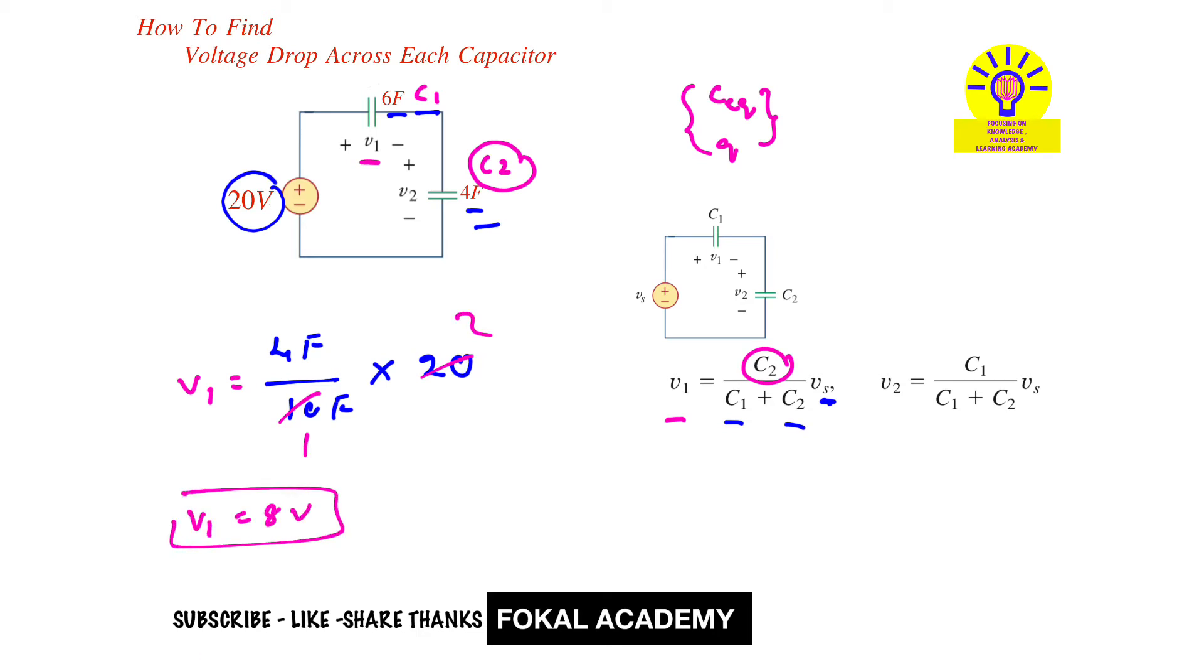Similarly, you can find V2. V2 equals the opposite capacitor, that is C1, which is 6 Farad, times the total voltage source, 20 volts, divided by 10. That's the sum of the capacitors: 6 Farad plus 4 Farad equals 10.